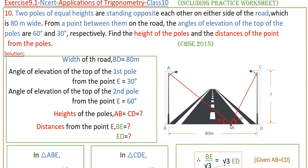If you take any point on this road — for example, point E — and from this point you look at the top of the first pole AB, the angle of elevation is 30 degrees. From this point to the top of the second pole CD, the angle of elevation is 60 degrees. We have to find the distances BE and ED from point E to each pole.